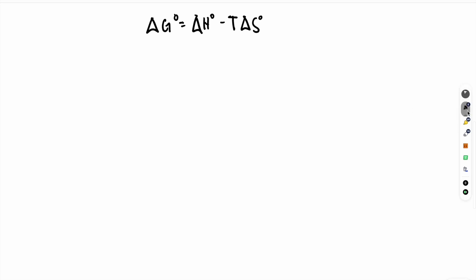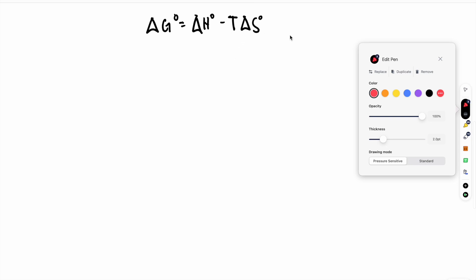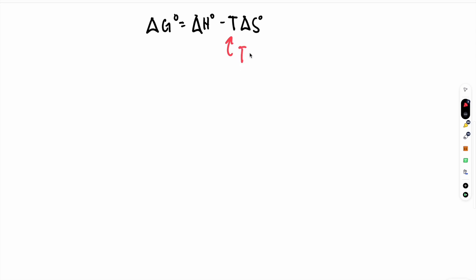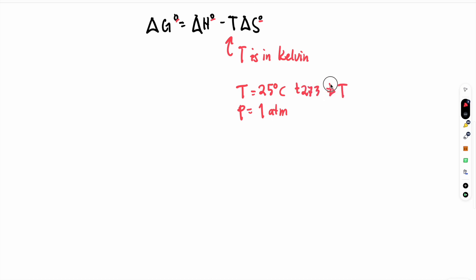In standard conditions, temperature T is in Kelvin. If it's in standard conditions, T equals 25 degrees Celsius and the pressure is 1 atmospheric pressure. To convert to Kelvin, we add 273, so 25 plus 273 gives 298 Kelvin. Always remember: if the degree sign is marked, it means standard conditions and the temperature is 298 Kelvin.